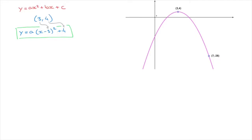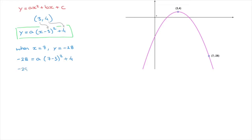We can see from the question that this parabola passes through the point with coordinates 7, negative 28. This allows us to state that when x equals 7, y must equal negative 28. To find the coefficient a, we rewrite the vertex form expression replacing y by negative 28 and x by 7: negative 28 equals a times 7 minus 3 squared plus 4. That gives negative 28 equals a times 4 squared plus 4, and since 4 squared is 16, that becomes negative 28 equals 16a plus 4.